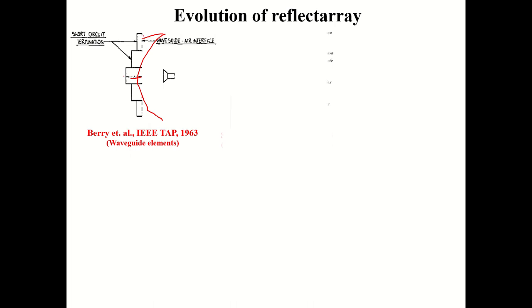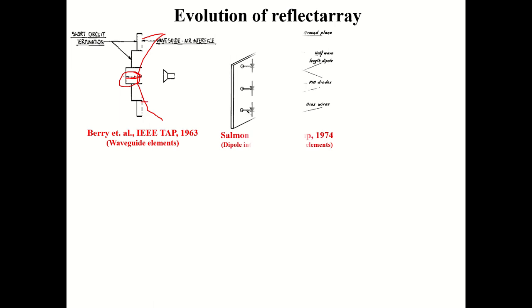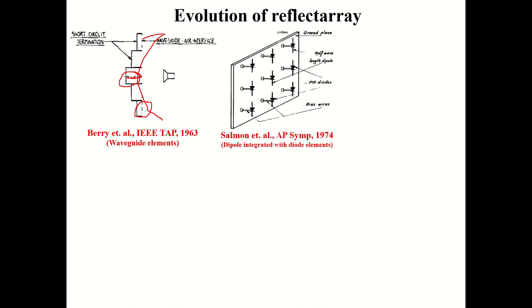The reflectarray didn't start with printed elements. Initially it was implemented with waveguides. When the feed horn emits spherical waves, the signal reaches the center first and edges last. To delay the center signal so all reflections arrive simultaneously, the waveguide length is made large at the center and small at the edges. This is how phase correction was achieved.